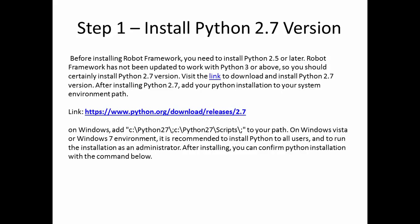The link is https://www.python.org — go to download release 2.7. On Windows operating system, you need to add Python and the Python scripts folder to your environment path. On Windows Vista or Windows 7 environment, it is recommended to install Python to all users.